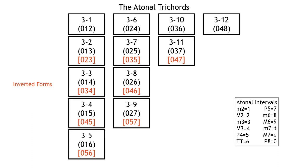Notice that set 3-3 is 0-1-4 in its prime form — we have a half step followed by a minor third. If we were to take the half step and move it from being above the bottom pitch of the boundary pitches to below the top pitch of the boundary pitches, we still have the exact same intervals: a minor third and a half step combined together creating a major third. But now that minor second — that half step — occurs below the top pitch of the set. That's going to be useful because sets can show up in either their prime form or their inverted form.